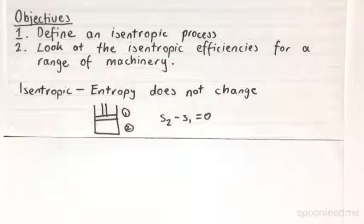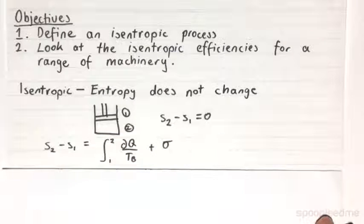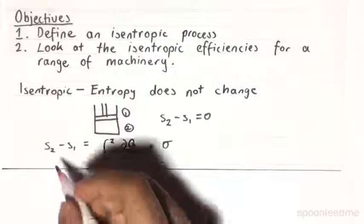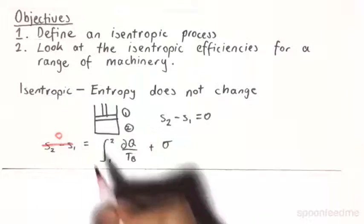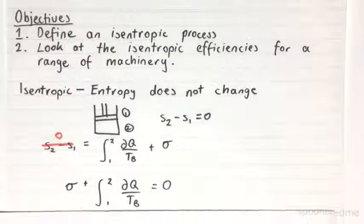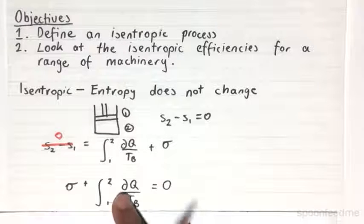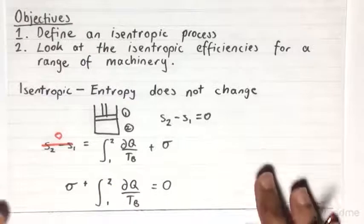What this means in terms of the second law of thermodynamics is that if we use this closed system arrangement, this will equal 0. Therefore, our entropy generated plus the entropy transferred term, which is this one here, will equal 0.